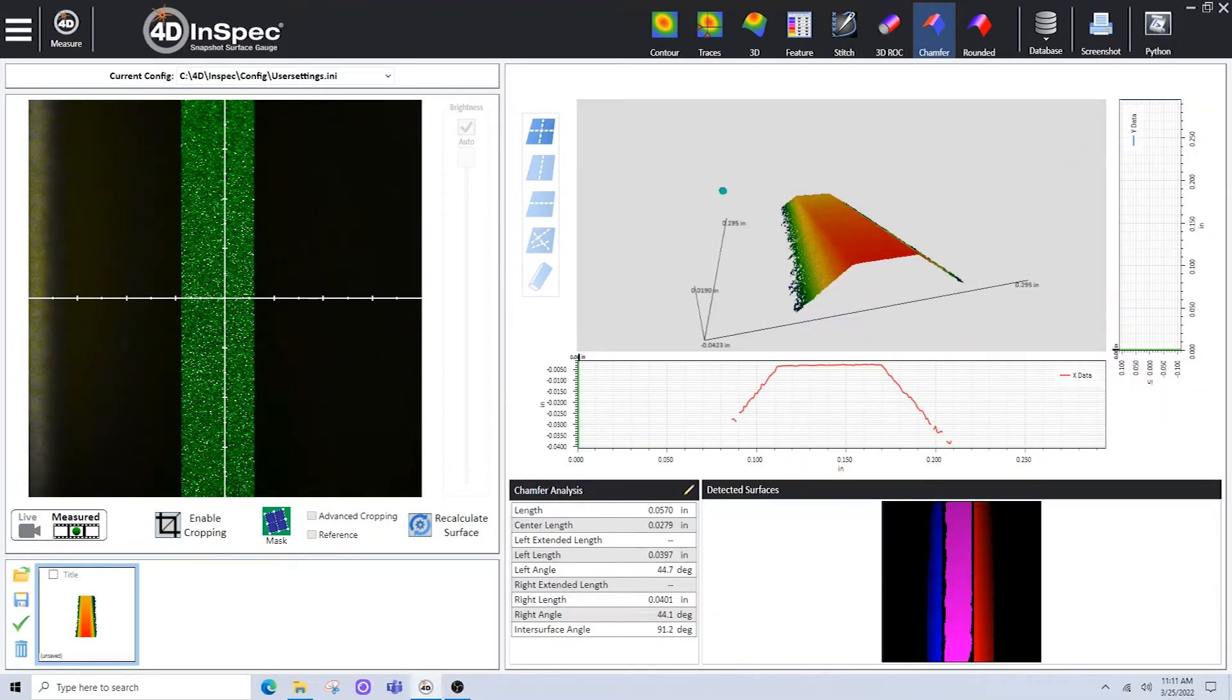What that will do is identify all the data points that belong to the left side, the chamfer face, and the right side. As you can see here in the detected surfaces, the blue is the left side, the pink is the chamfer face, and the red is the right side.